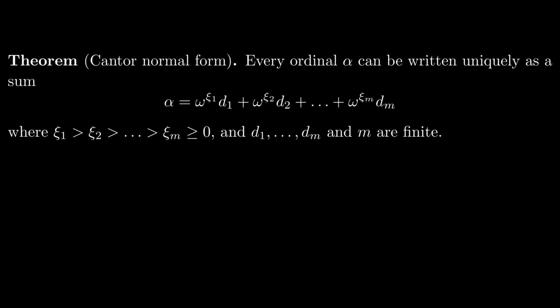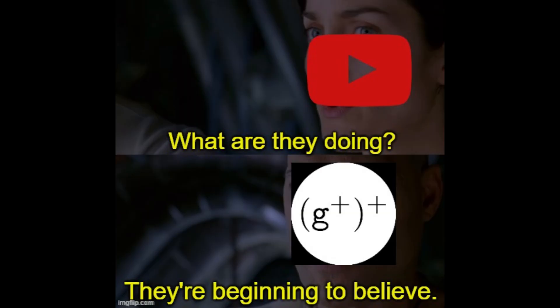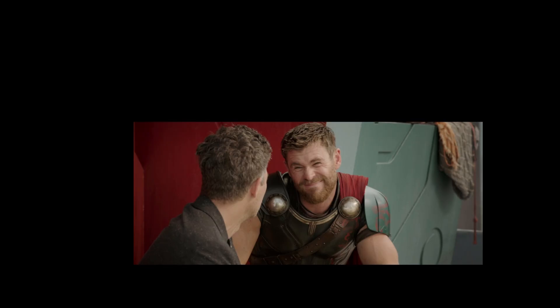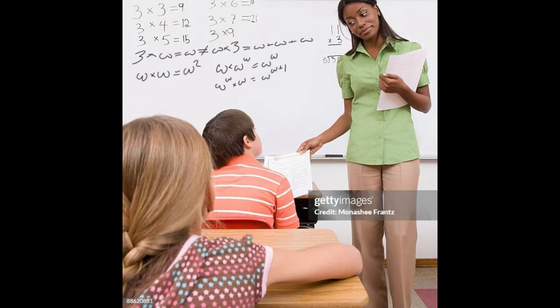The expansion of an ordinal in base omega is called its Cantor normal form. I introduced ordinals, their arithmetic, and how to expand them in any base in my previous video. Strictly speaking, if you're willing to take ordinal operations and Cantor normal form on faith, you don't need to watch the previous video. If you're a healthy skeptic, though, you'll have to pause this video yourself, because the rest of us aren't going to wait 15 minutes for you to catch up with the recommended prerequisites. Next time, do your homework before you come to class.